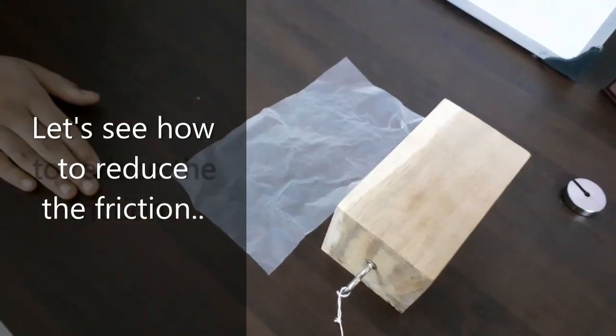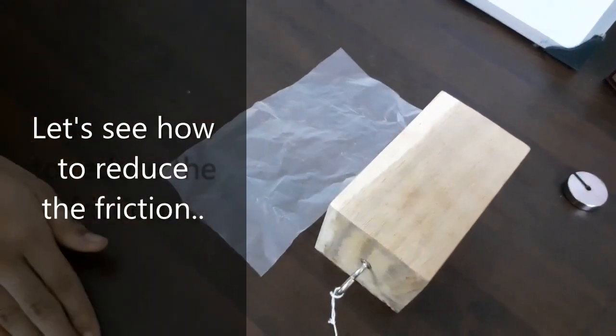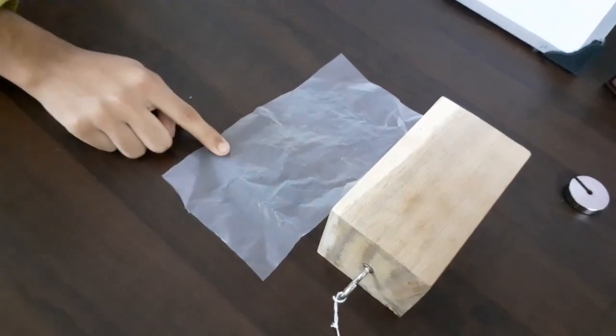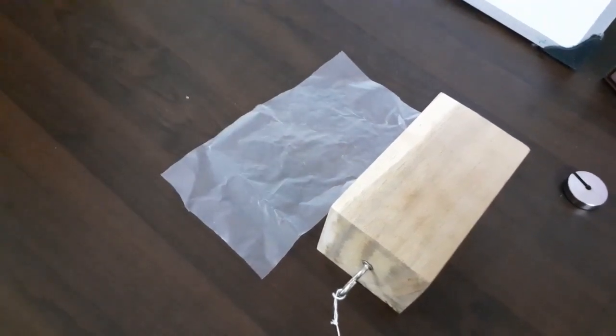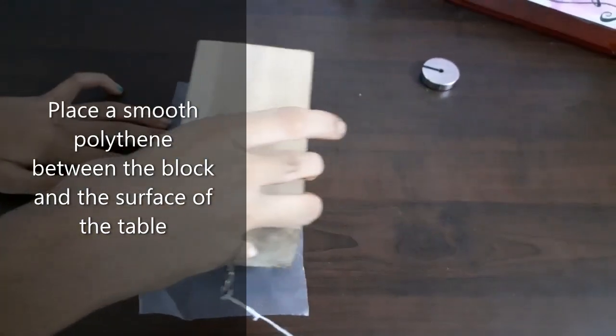Now to reduce the friction between the block and the table surface, I am using this smooth plastic paper. Now I will place this smooth paper below the block.